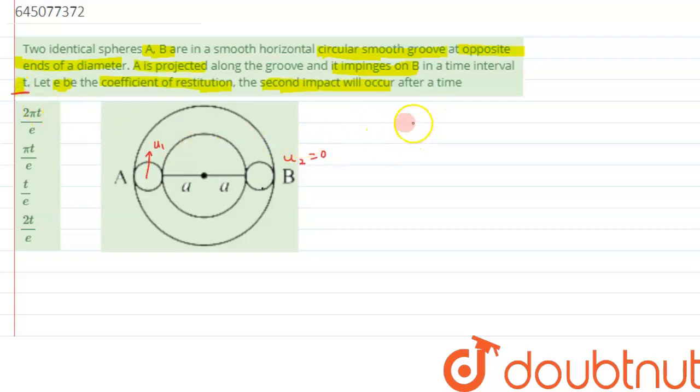We can calculate the value of t. T can be written as the relative displacement between the two, which is half the circumference of the circle, so it can be written as πa divided by u₁. From here we can calculate u₁, which equals πa/t. Let's say this is equation number one.